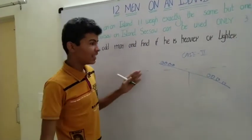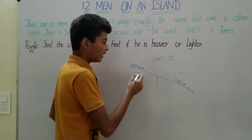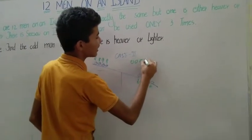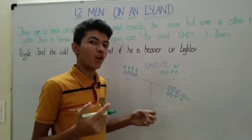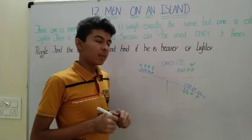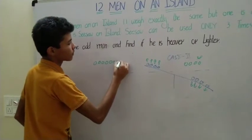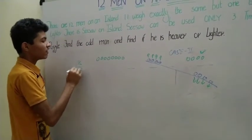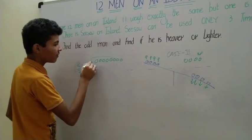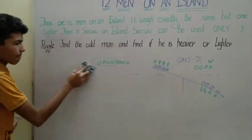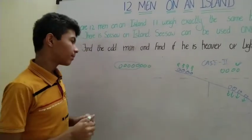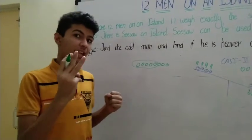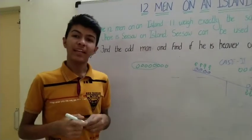Now let's move to Case 2, where the first weighing is unbalanced. This gives us the most suspects — either the 4 on the heavy side are heavier, or the 4 on the light side are lighter — so all 8 are suspects. The 4 who were left out are confirmed normal. For the second weighing, we have 8 suspects and need to leave at most 3 suspects going into the third weighing.